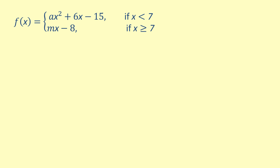Given the piecewise function f of x, which equals ax squared plus 6x minus 15 when x is less than 7, and mx minus 8 when x is greater than or equal to 7, we want to find a and m such that f of x is continuous and differentiable. There are two unknowns and two conditions we can use to find equations containing them. The sub-functions are a parabola and a line, both of which are continuous and differentiable for all values of x.